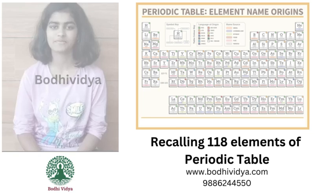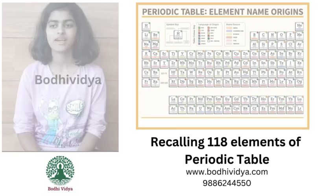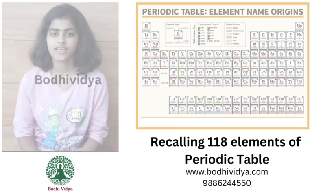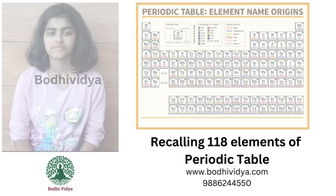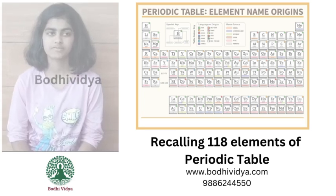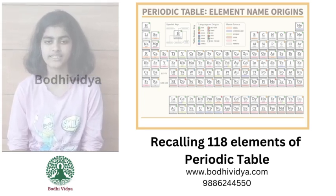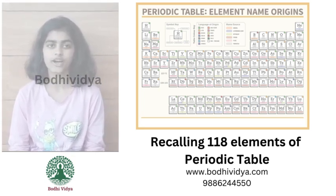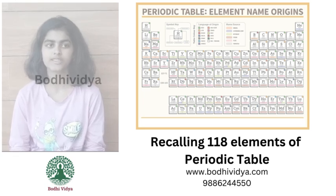Good morning everyone. I am Amrita. Today I am here to say elements. In chemistry, 118 elements are there. According to IEPAC system, there are 18 groups and 7 periods in a periodic table.